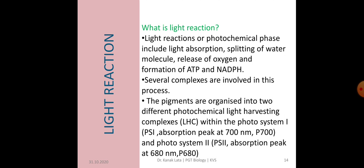During light reaction, several complexes are involved. The pigments are organized into two different photochemical light harvesting complexes within the photosystem 1, that is PS1, and photosystem 2, that is PS2. The light harvesting complexes are made up of hundreds of pigment molecules bound to proteins.